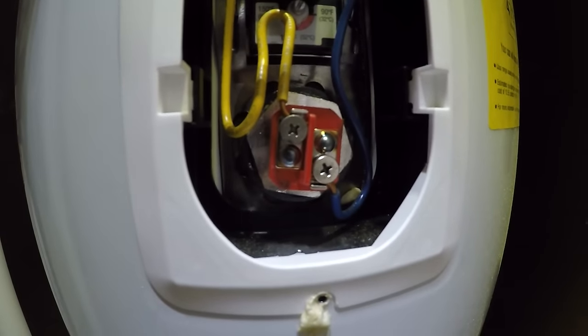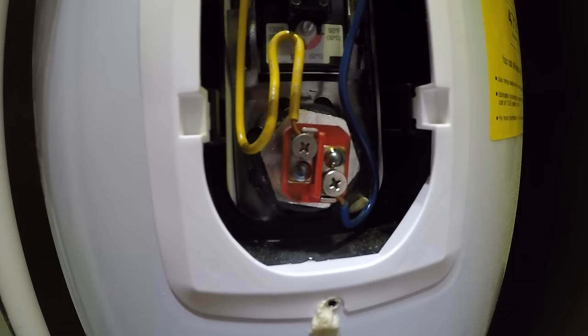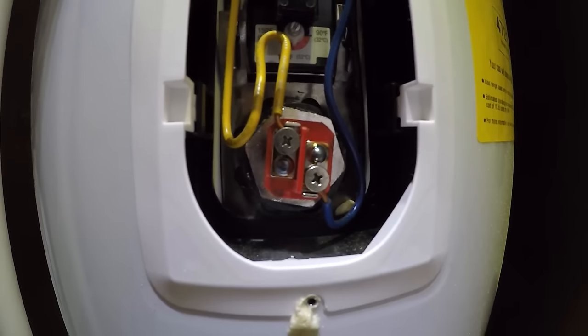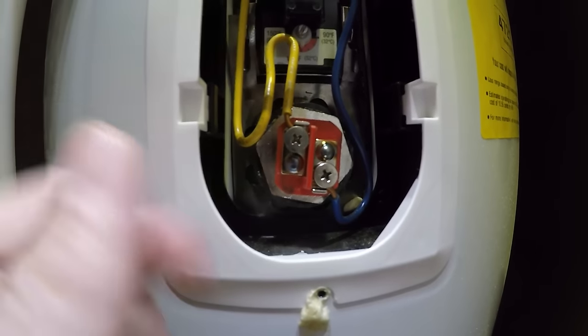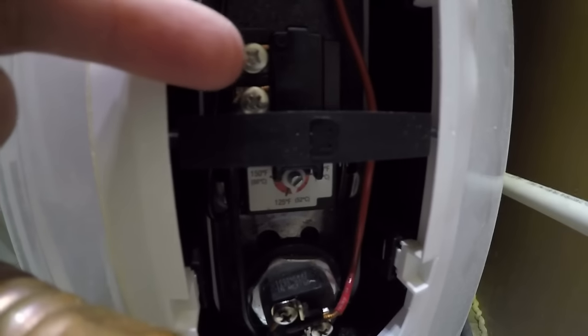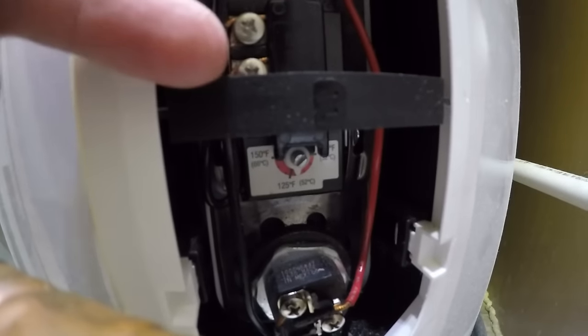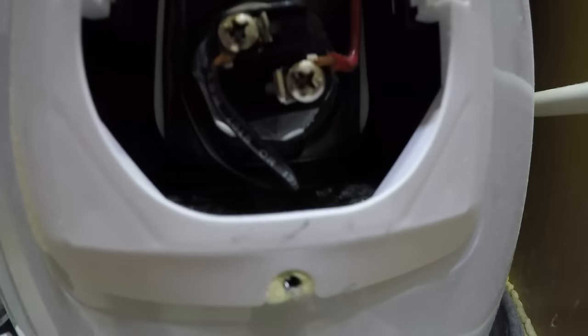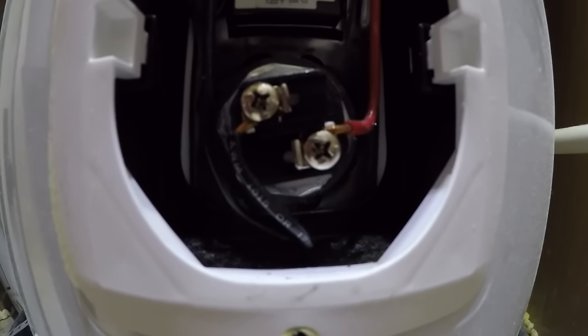This particular one screws into this unit. It does not bolt in there. So you need a wrench to get in there and unscrew this thing out. Moving down to the lower section, there is a second thermostat down here. And then underneath that with the black wire and red wire connecting to it is the lower heating element.